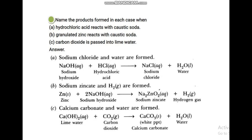Name the products formed when hydrochloric acid reacts with caustic soda. Caustic soda is NaOH — it is called caustic soda because of the Na (sodium). NaOH reacted with HCl gives NaCl and H2O.